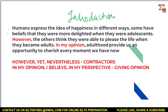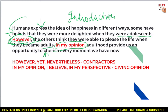If you look at the introduction, the linking word used here is 'however.' It reads: 'Humans express the idea of happiness in different ways. Some have beliefs that they were more delighted when they were adolescents' — meaning teenagers. 'However, others think that they were able to please the life when they became adults.' So 'however' is showing contrast here: one side talks about teenagers, and the other talks about adults.